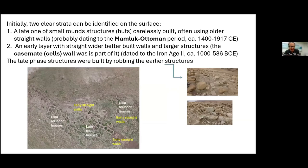There are three excavation areas — A, B, and C. Clearly you can see two periods on the site. Some structures are very well preserved because of the very dry area with not much rain — some structures are standing about two meters high. Most of these later structures are rounded small buildings dated maybe to the Mamluk or Ottoman period. But underneath there is more massive architecture, including what we call a casemate wall — a fortification wall made of rooms or cells — dated to the Iron Age 2, with most pottery on the surface dated to Iron Age 2, the first millennium BC.